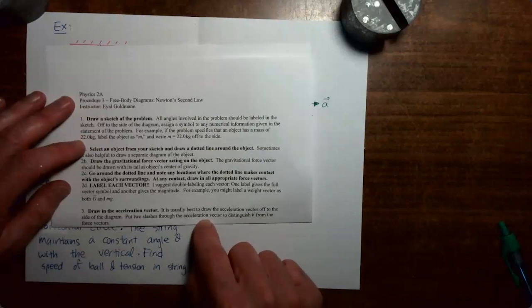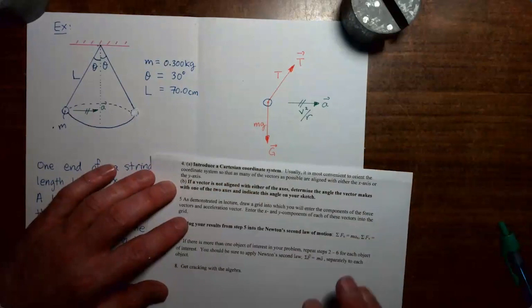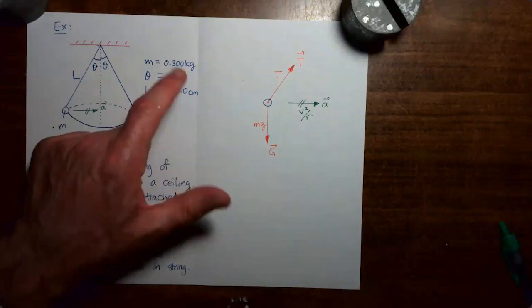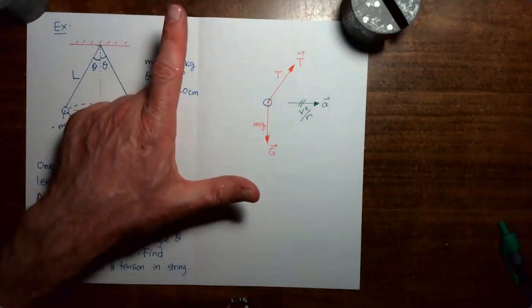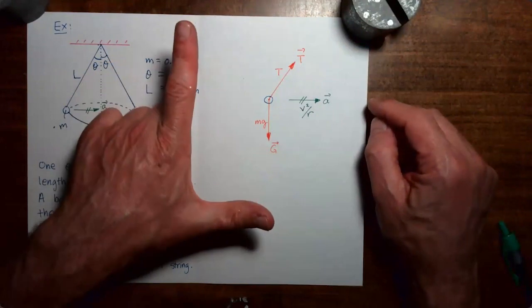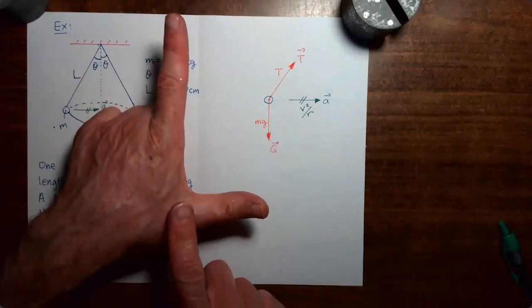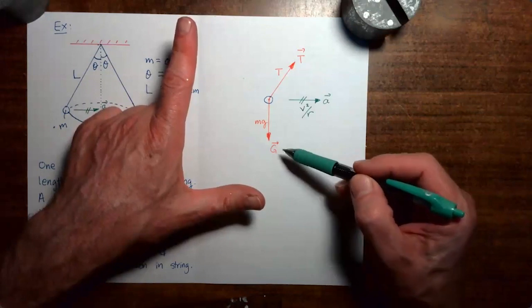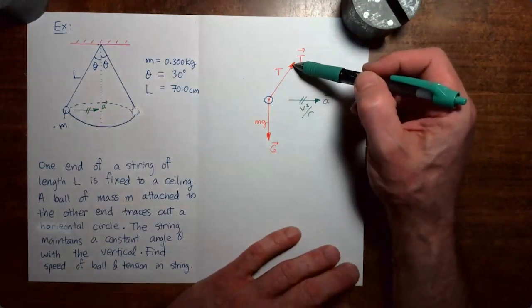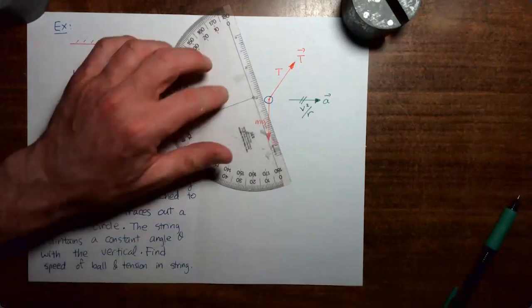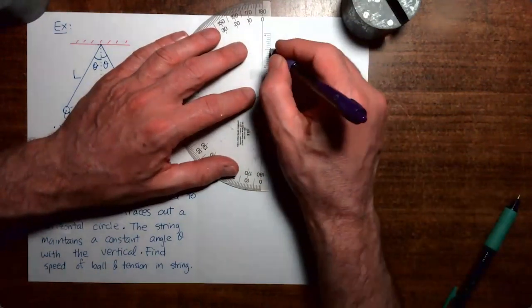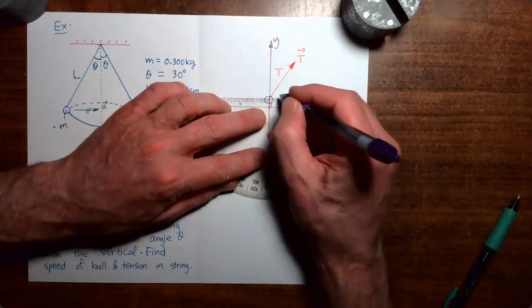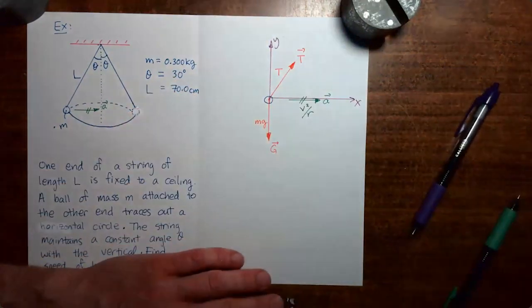Now we've gone through step three on the handout. Step four is to set up a coordinate system. As usual, we want to pick the orientation so that as many vectors as possible line up with one axis or the other. In this case, we use standard orientation with the x-axis pointing to the right and the y-axis pointing up, so both the acceleration vector and the gravitational force vector will line up with an axis. I'll put in the coordinate axes in the figure.